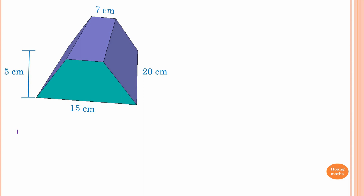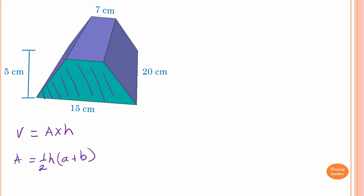We know that volume of any prism is area times height. So we just find the area of this trapezium. Area equals a half of height times (A plus B). The height of this trapezium is 5 centimeters. So we substitute 5 there. A and B are 15 and 7 — because that side is 7, so this must also be 7 centimeters. So we put A as 7 and B as 15.